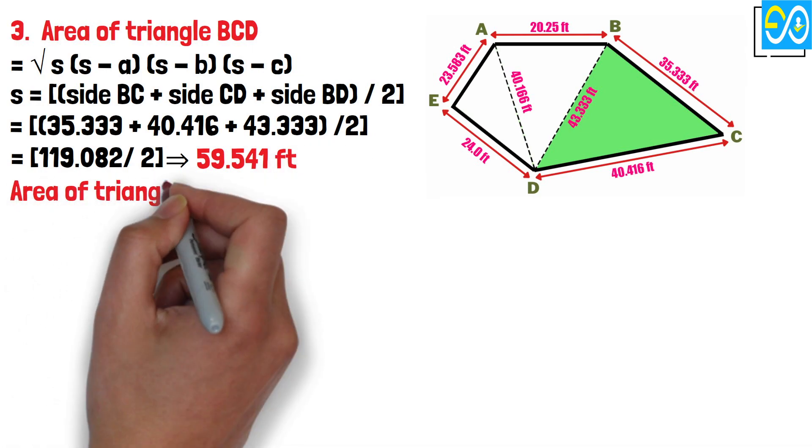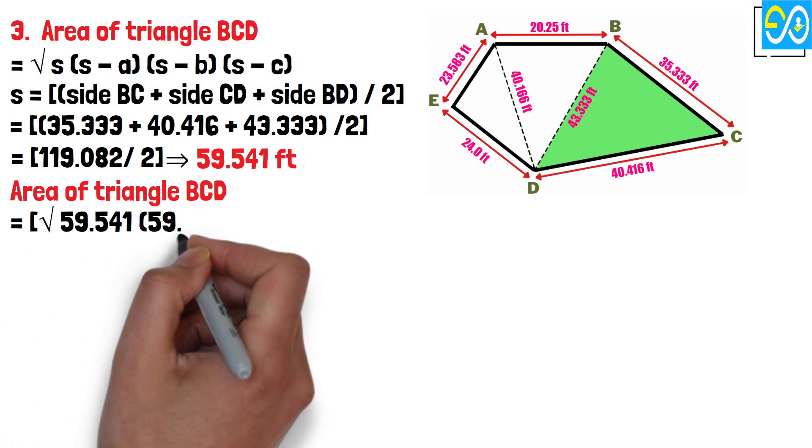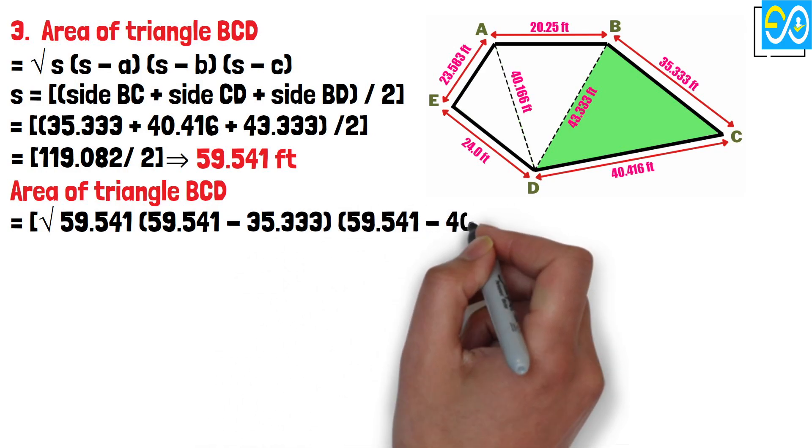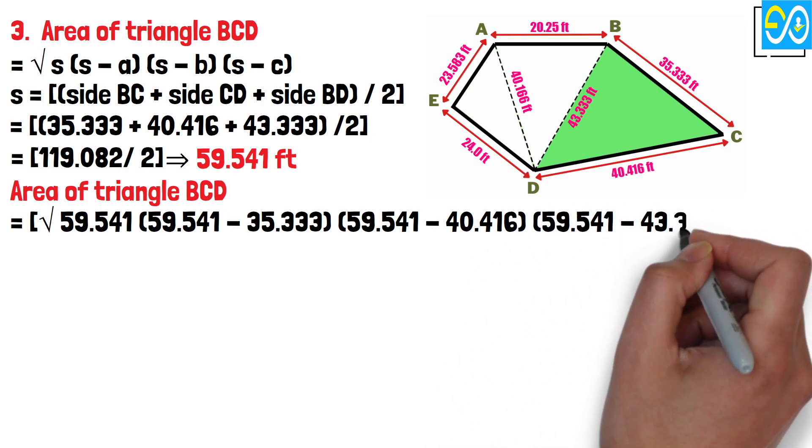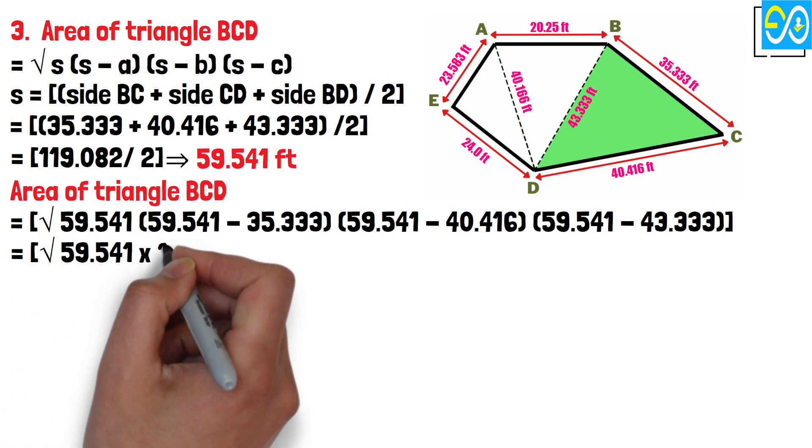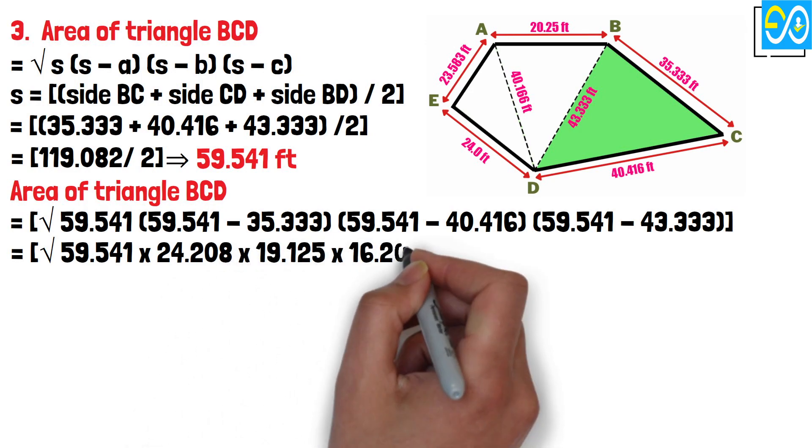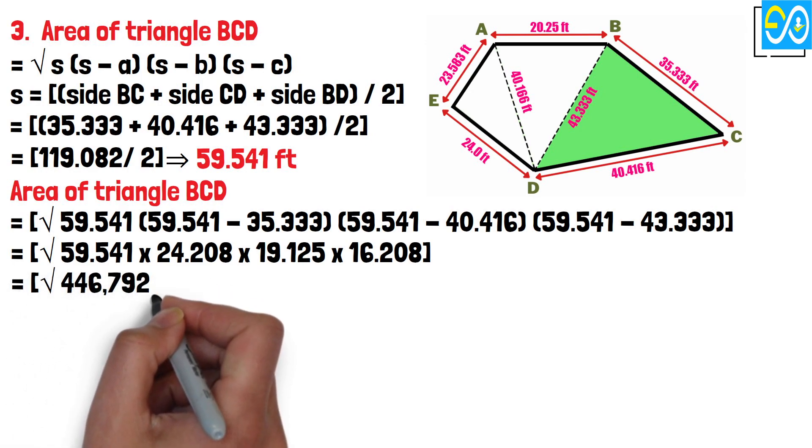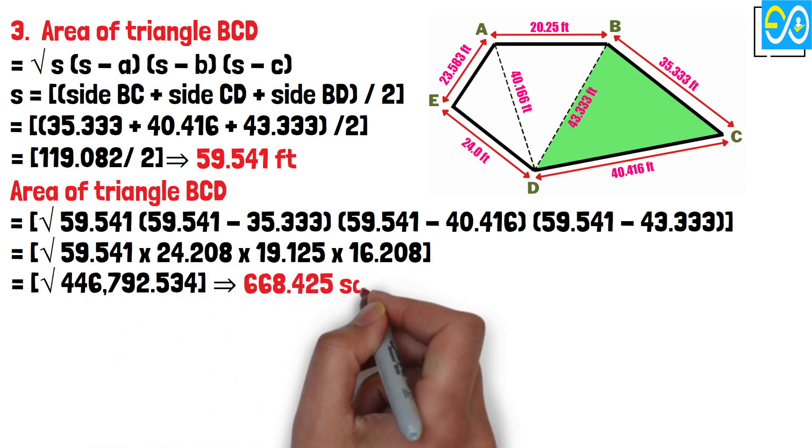Area of triangle BCD equals square root 59.541 times (59.541 minus 35.333) times (59.541 minus 40.416) times (59.541 minus 43.333). Equals square root 59.541 times 24.208 times 19.125 times 16.208. Equals square root 446,792.534 equals 668.425 square feet.